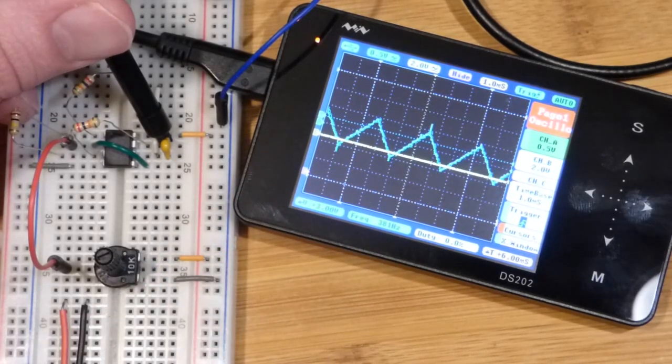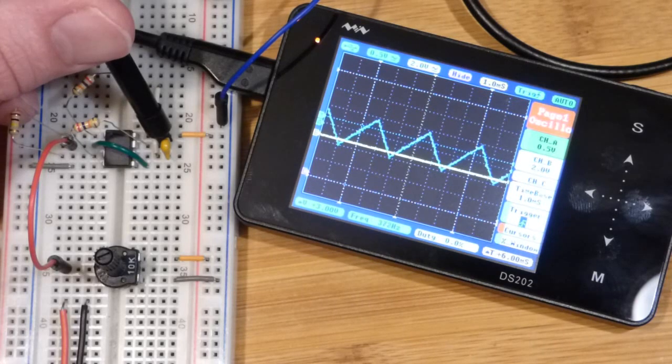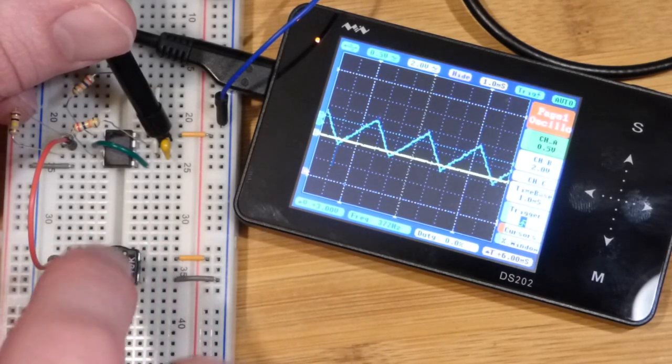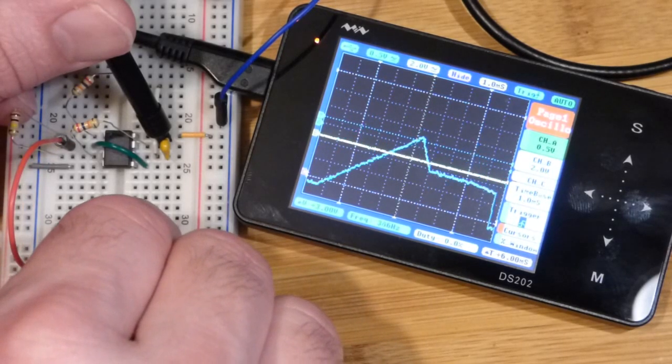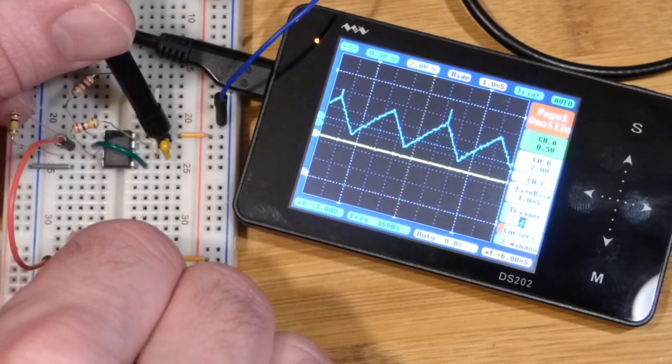We got some spikes and stuff, but in any case, you can see with this potentiometer here we can change the shape of the wave.